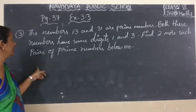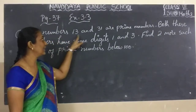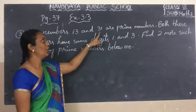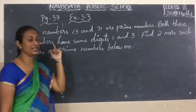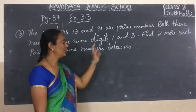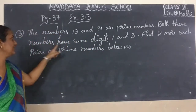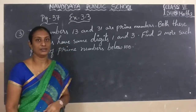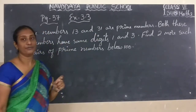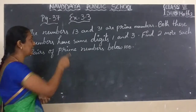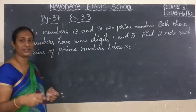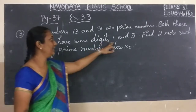What is the third sum they have given? The numbers 13 and 31 are prime numbers. 13 is a prime number and 31 is also a prime number. Both these numbers have the same digits. By observing these two numbers, we can observe we are having the same digits: 13 has digits 1 and 3, and 31 has digits 3 and 1.